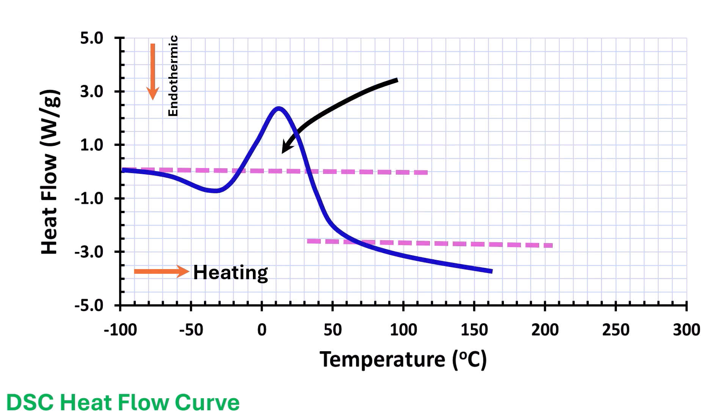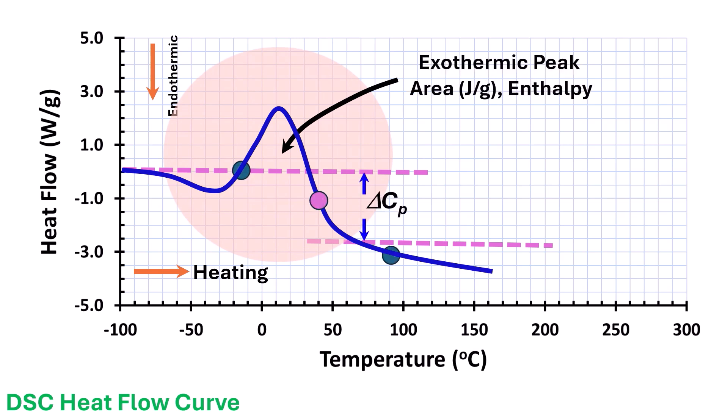Similarly, an exothermic peak at the onset of glass transition could also be observed. Although exothermic or endothermic peak makes heat flow curve complicated, however, it clearly confirms the glass transition. In many instances, annealing close to this peak and then second scan could remove the exothermic or endothermic peak if it is a sample relaxation issue.